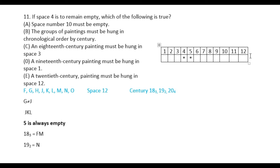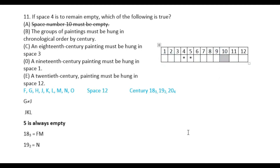The groups of paintings must be hung in chronological order by century. The group is called chronologically, and the 18-19-20 order must be maintained. So this is option B. Option C: an 18th century painting must be hung in space 3 — spaces 1, 2, 3. Space 3 is the option to keep the 18th century in space 3. This is option C.